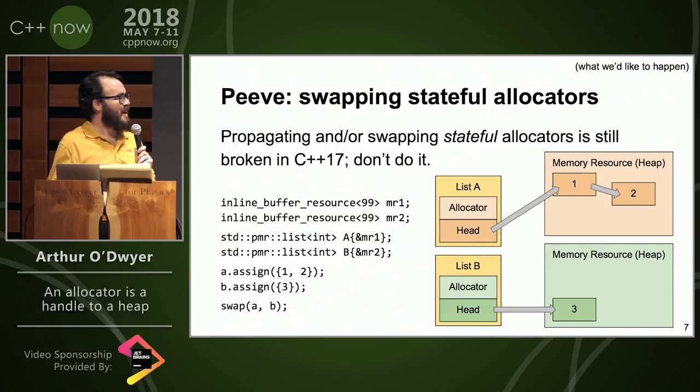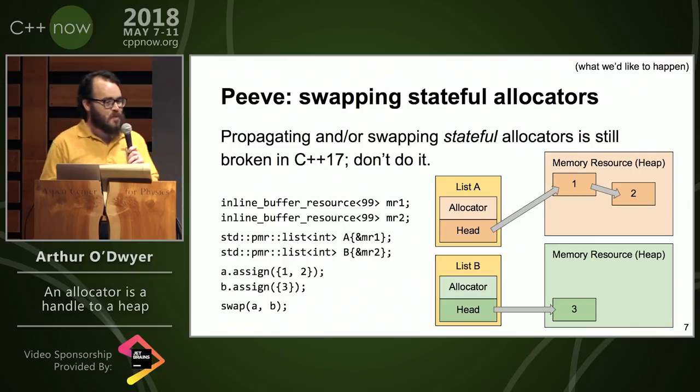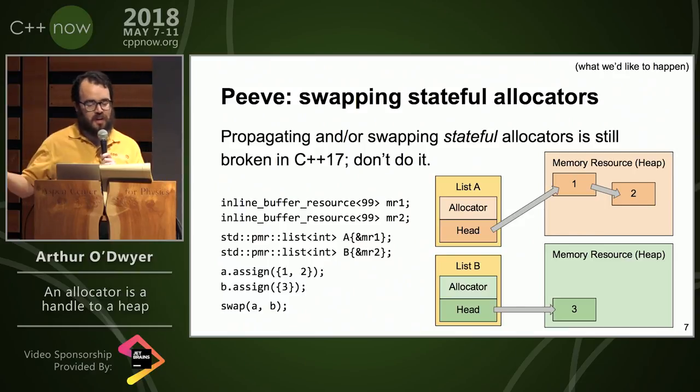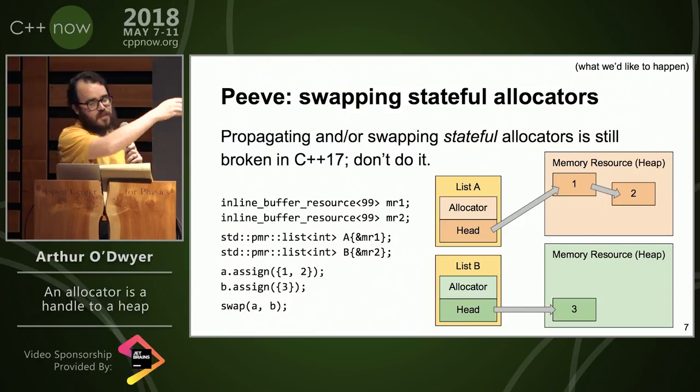Speaking of sticky allocators, which you might have noticed happening there if you were very sharp-eyed, if you have two PMR allocators, which are stateful, and you have a std.pmr list with one heap and a PMR list with a different heap. So here I have my two heaps, my red heap and my green heap, and I have a list associated with the red heap and a list associated with the green heap.